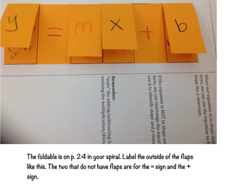This foldable is on page 24 in your spiral. You're going to label the outside of the flaps like this. The two that do not have the flaps are for the equal sign and the plus sign.